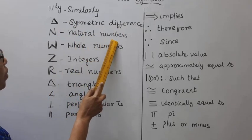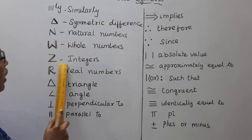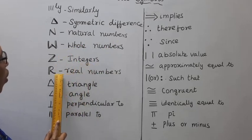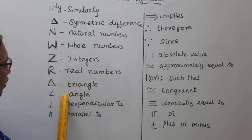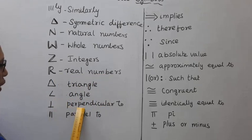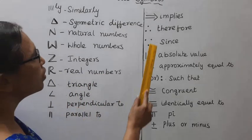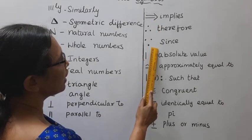Natural numbers. Whole numbers. Z integers. Real numbers. Triangle. Angle. Perpendicular to. Parallel to. Implies. Therefore. Since.